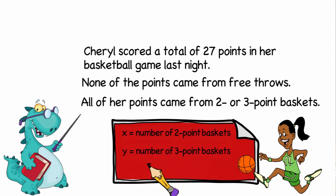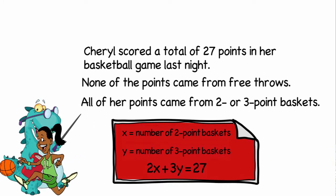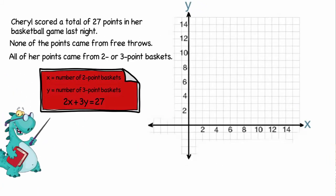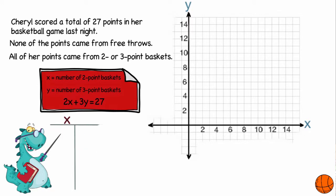So my formula would be 2x plus 3y equals 27 total points. Now we're going to make a graph in hopes of finding all the possible combinations. In order to make a graph, you need at least two coordinates.